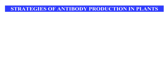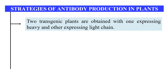Now, what are the different strategies that can be used for antibody production in plants? As I mentioned, we transfer the genes for both heavy chain and light chain. The first strategy is that we can make two transgenic plants — one having the gene for heavy chains and the other having the gene for light chains. These two transgenic plants can then be crossed with each other to make a hybrid plant, or we can purify the heavy and light chains from both plants and combine them to make a functional antibody — but it is a lengthy process.